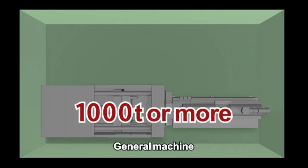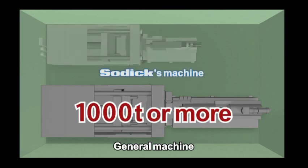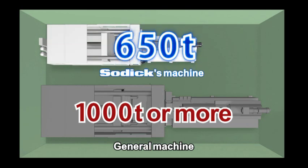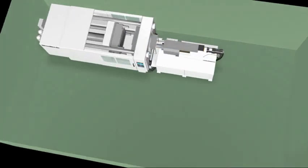Sodic's machine allows for molding with only 650 tons of clamping pressure, where the conventional machine required 1,000 tons or more, which also realized great space saving.